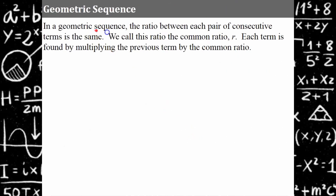In a geometric sequence, the ratio between pairs of consecutive terms is the same. We call this the common ratio and refer to it as the variable r. Each term is found by multiplying the previous term by the common ratio. By contrast, the arithmetic sequence you've seen before has a common difference — you repeatedly add the same value — whereas in a geometric sequence you multiply by a common factor to get each consecutive term.